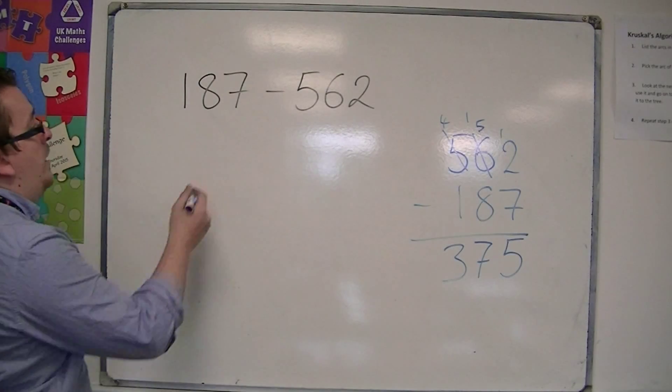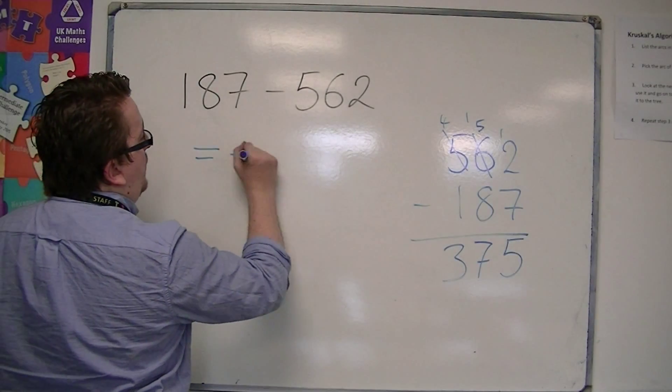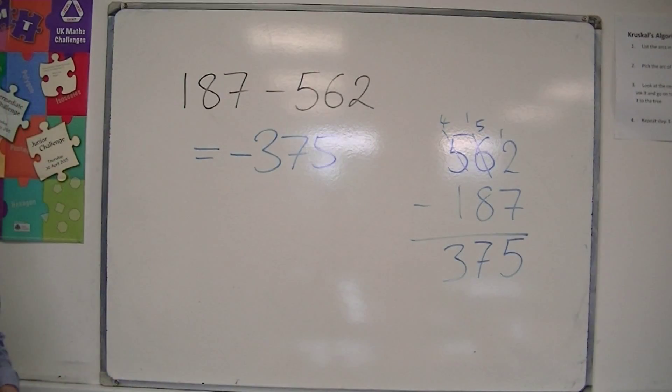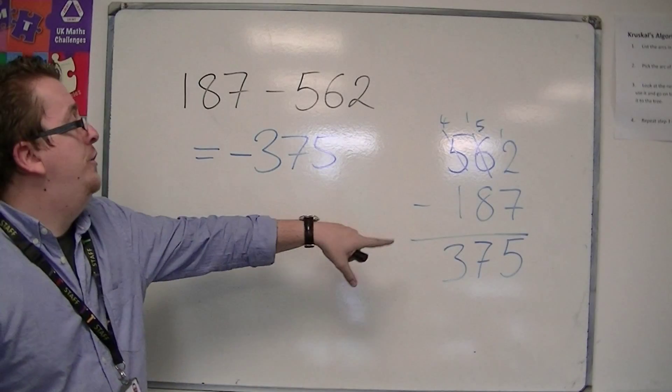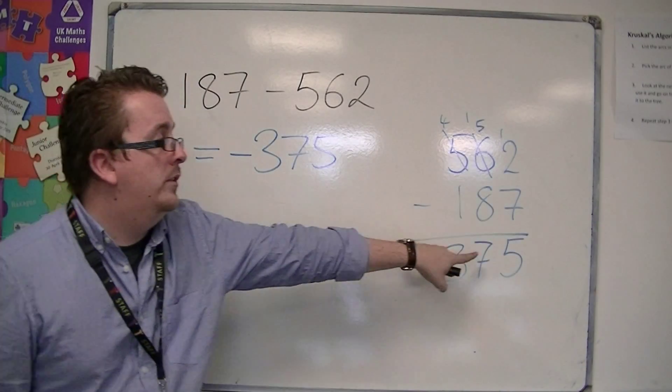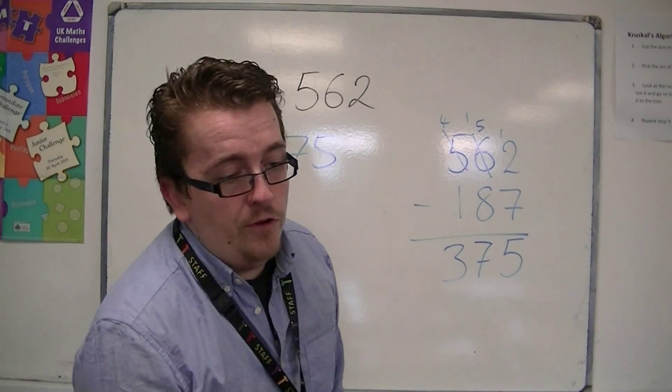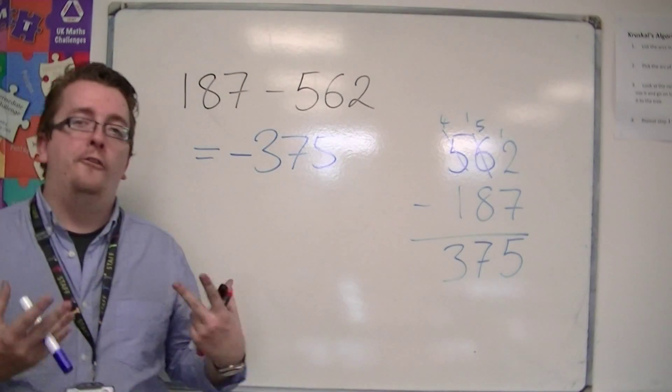So, 187 take away 562 is minus 375. You just stick the negative in front when you've calculated the difference the other way around, and this will allow you to subtract a larger number from a smaller one.